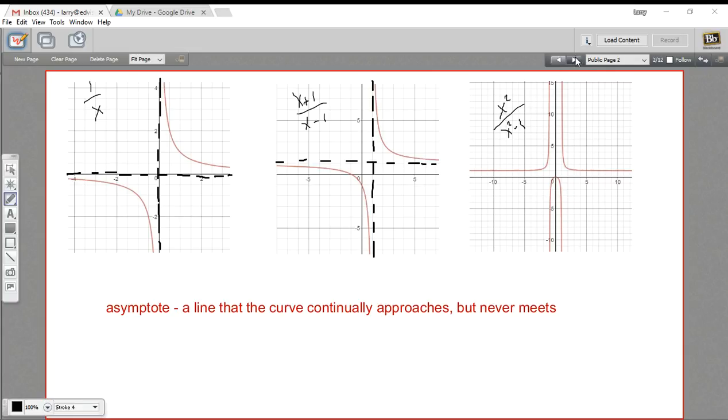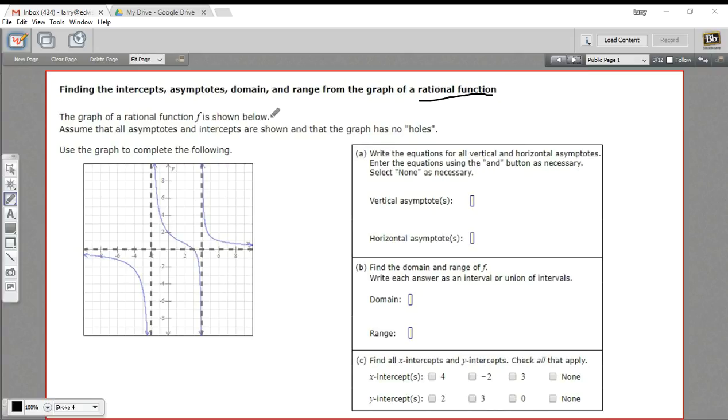Let's take a look at this first problem. It says the graph of a rational function f is below. Assume that all asymptotes and intercepts are shown and that the graph has no holes. Sometimes instead of an asymptote, a graph can have just a single spot where there's no value for it. We'll look more at that later.